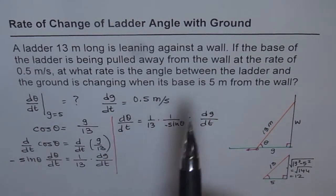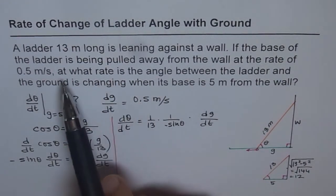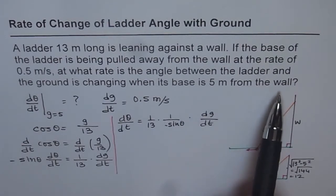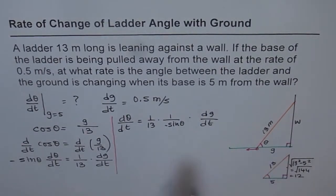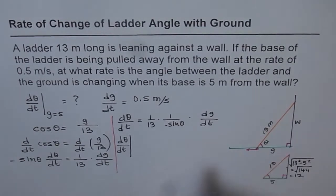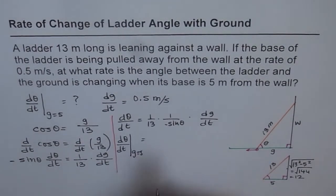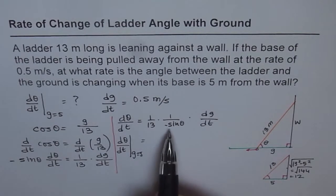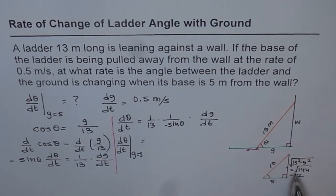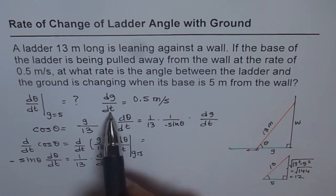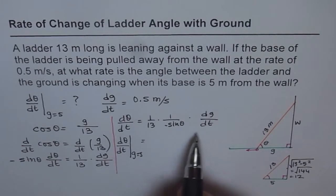We want to find the rate at which the angle between the ladder and the ground is changing when its base is 5 meters from the wall. So we write dθ/dt when g = 5. We substitute all the values to find the angle. When g is 5, sin θ = opposite over hypotenuse = 12 over 13. So we replace sin θ with 12/13, and dg/dt is given as 0.5.